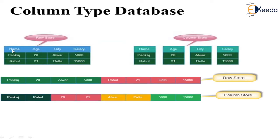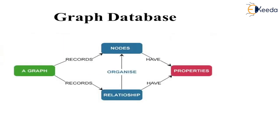The column family type stores data column-wise. For example, a row may contain names Pankaj and Rahul. In row storage, we write Pankaj with age 20 and salary 5000 in the first row, then the second row. In column storage, we first write the first column — Pankaj and Rahul — then the second column values 20 and 21. This is how data is stored in column-type databases.